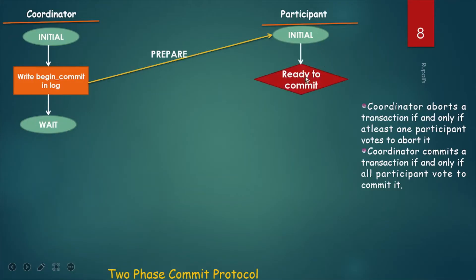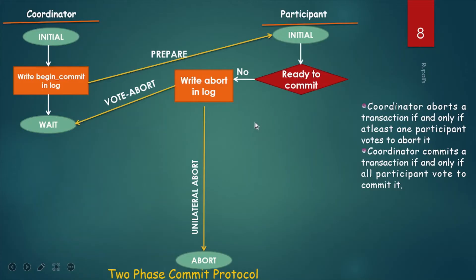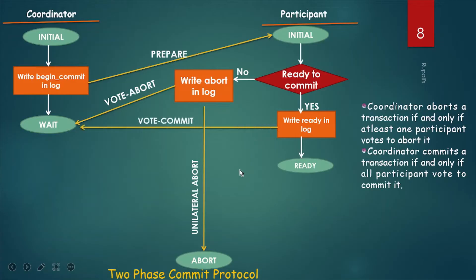If the participating site is not ready to commit, it writes abort in its own log, takes a unilateral abort, goes to abort state, and sends a vote-abort message to the coordinator site. But if the participating site is ready to commit, it writes 'ready' in its own log, goes to the ready state, and sends a vote-commit message to the coordinator site, indicating it is ready to commit.